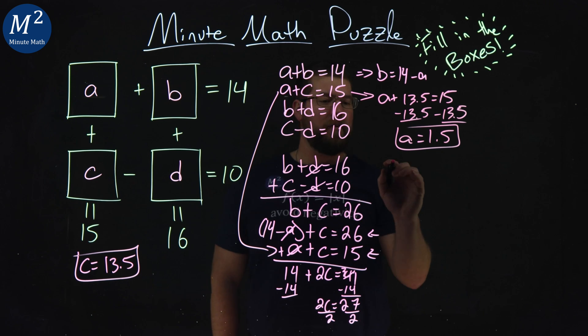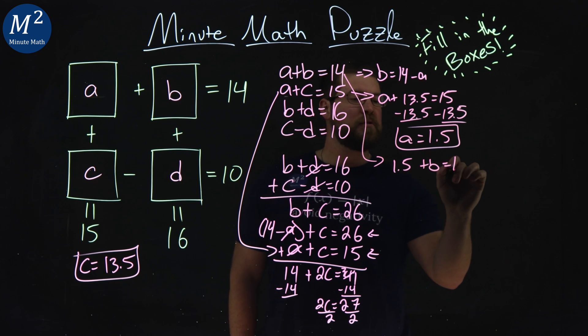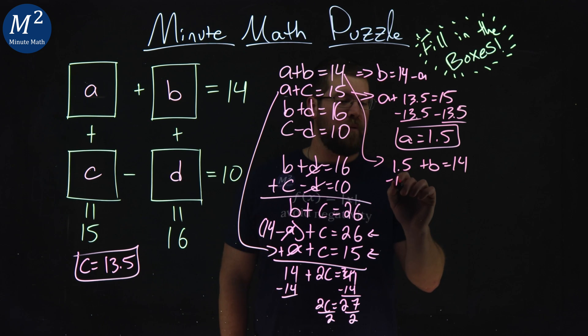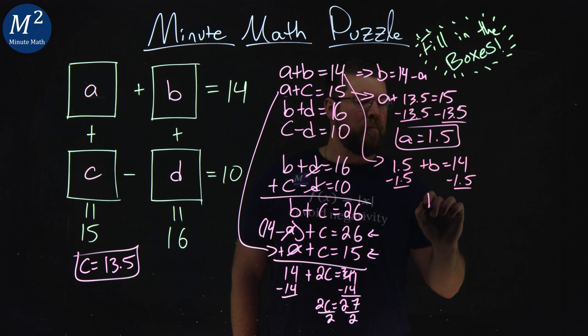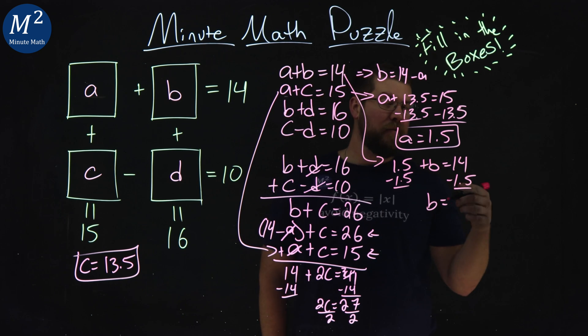Oh, let's go with our first equation now. We have A, 1.5, right? Let's just bring that here. Plus B is equal to 14. From there, I can get B. Subtract the 1.5 to both sides, and B is equal to a good old 14 minus 1.5. That is 12.5.